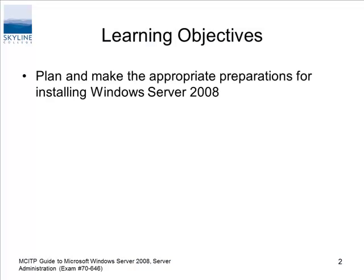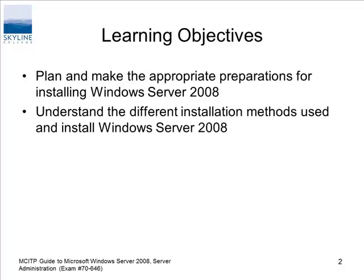The objectives: plan and make the appropriate preparations for installing Windows Server 2008. The planning and appropriate preparations you're going to do in the lab portion of the class. In this part — the lecture part, which also has labs — we're just going to do the install, do the mechanics of it. Understand the different installation methods used to install Windows Server 2008. Basically, DVD and WDS Server are the main ones. You can also image it — create your own image.